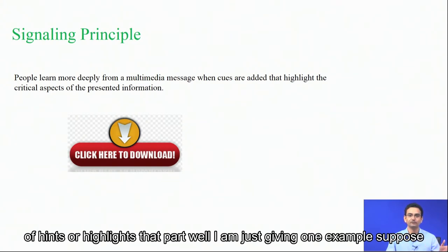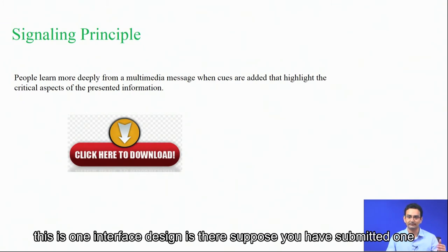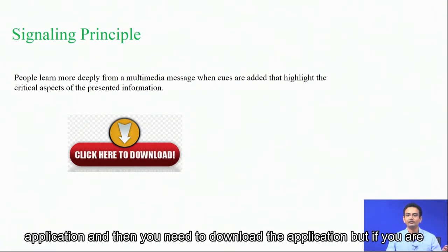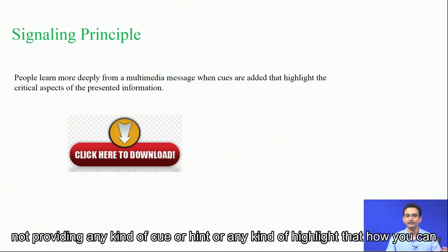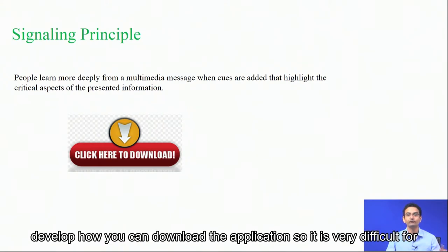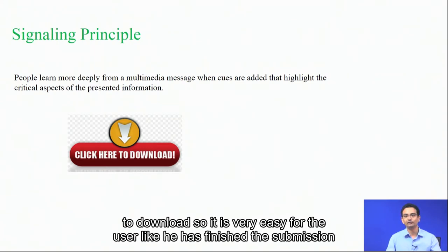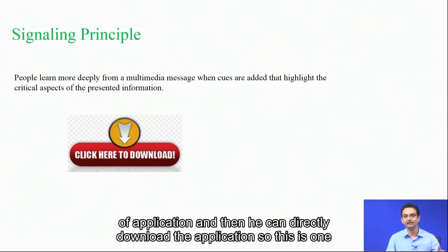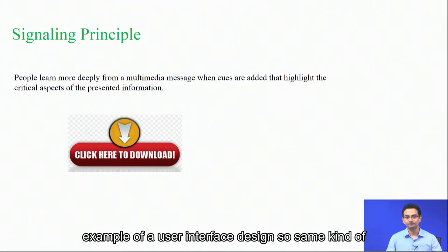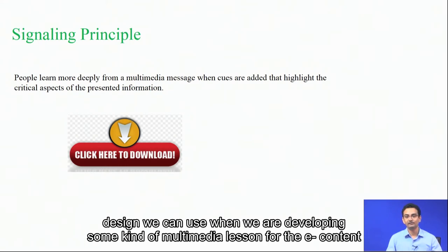For example, suppose there is one interface design where you have submitted an application and then you need to download it. But if you are not providing any kind of cue, hint, or highlight showing how to download the application, it is very difficult for the user. Suppose I have provided a signal here — 'click here to download' — so it is very easy for the user to finish the submission and then directly download the application. This is one example of a user interface design, and the same kind of design we can use when developing a multimedia lesson for e-content.